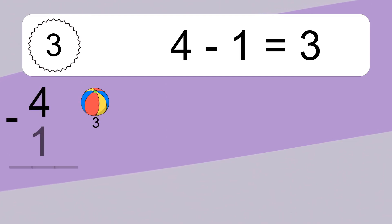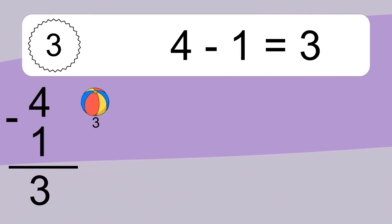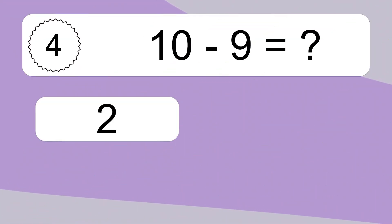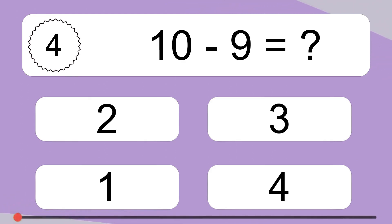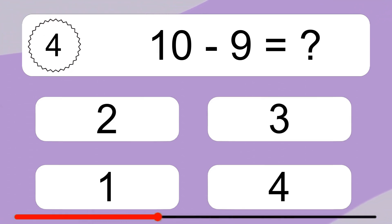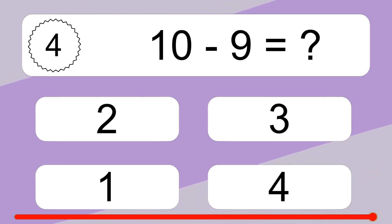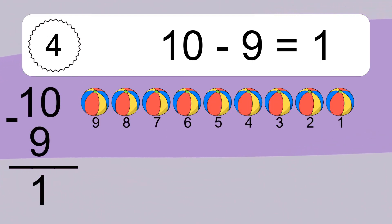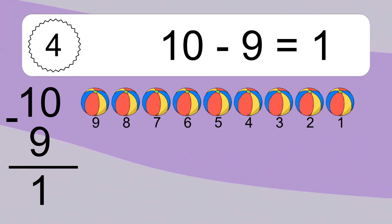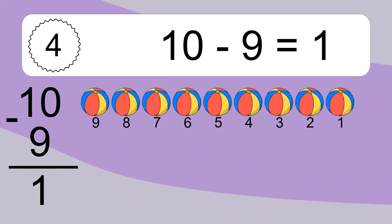4 minus 1 equals what? 4 minus 1 equals 3. Let's count it: 3. 10 minus 9 equals what? 10 minus 9 equals 1. Let's count it: 9, 8, 7, 6, 5, 4, 3, 2, 1.